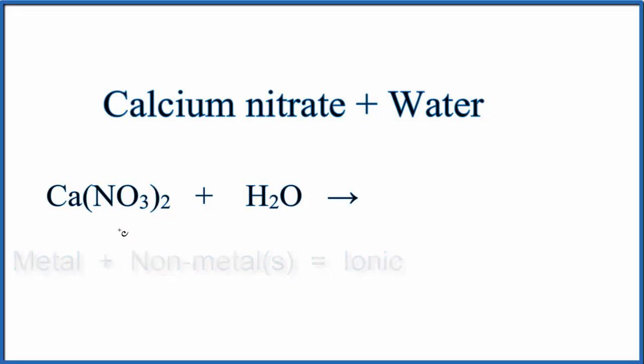So we go to the periodic table. Calcium's in group 2, so it has a 2-plus charge. And then this NO3, that's called the nitrate ion, that's not on the periodic table. We look that up on a table of polyatomic ions, and the nitrate ion here has a negative charge.